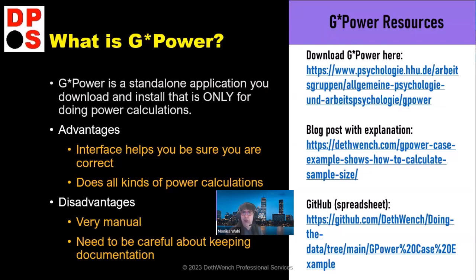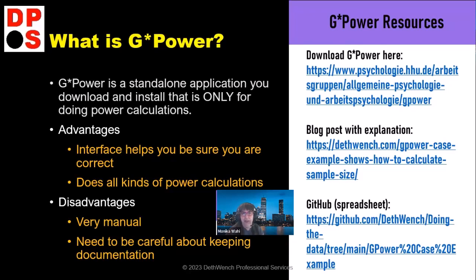The advantages of using G-Power are that the interface — the guided user interface with these drop-downs — helps you make sure that you're doing things the right way. I have actually done a calculation in G-Power, thought it was right, and then noticed I had a drop-down set wrong. So you can take a screenshot of what you did and catch your mistakes. It does all kinds of power calculations, but in practice you usually focus on a domain and only use certain parts.